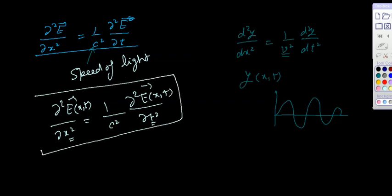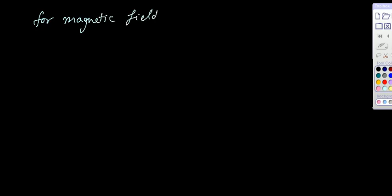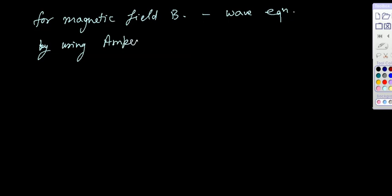This is the required result: ∂²E/∂x² equals (1/c²) ∂²E/∂t². The left-hand side shows variation in x and the right-hand side in t, so E is a function of only x and t — this is one-dimensional. The electric field component vibrates along the y direction and the wave propagates along the x axis. Similarly, we can derive the equation for the magnetic field component.